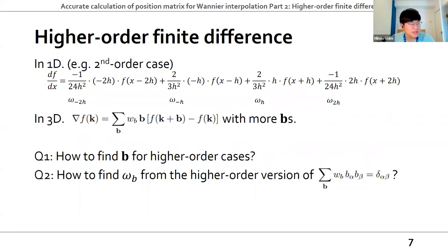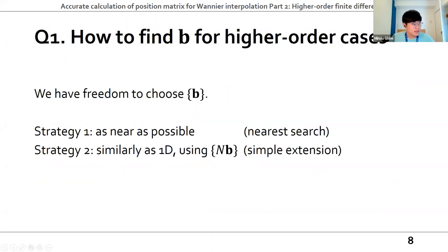For the high-order finite difference, the second-order formula in one dimension can be reconstructed similarly. In three dimensions, we have to choose more B vectors and corresponding completeness relations and W_B. The question can be divided into two parts. Question 1: How to find B for higher-order cases? Question 2: How to find W_B from the higher-order version of the completeness relation? We have chosen neighbors as B, 2B, 3B in one dimension, but the situation is different in 2D or 3D because we have the freedom to consider more directions.